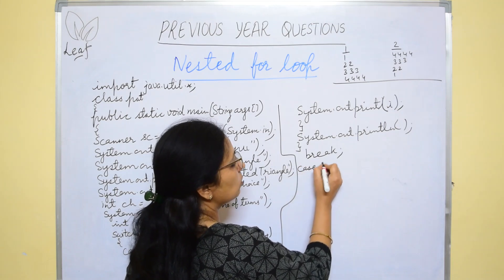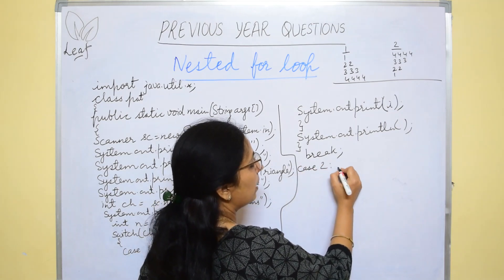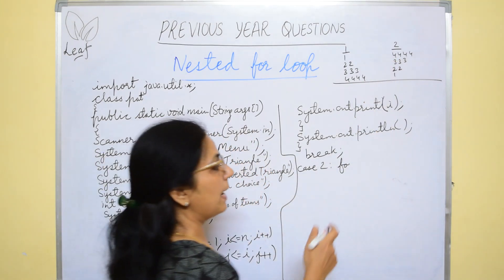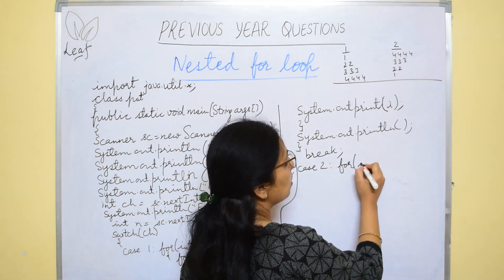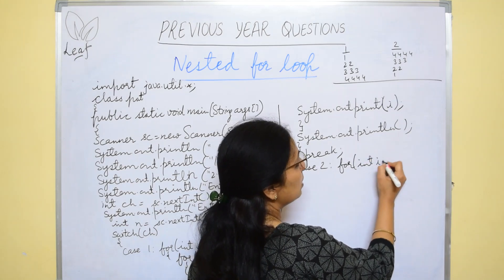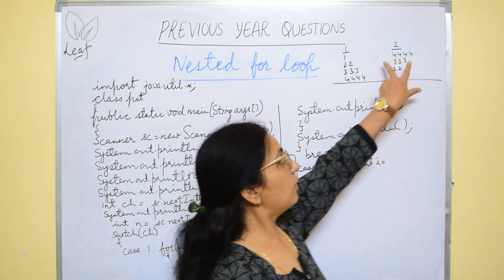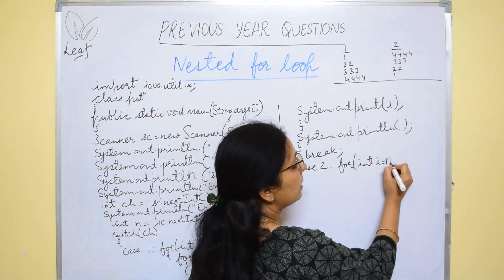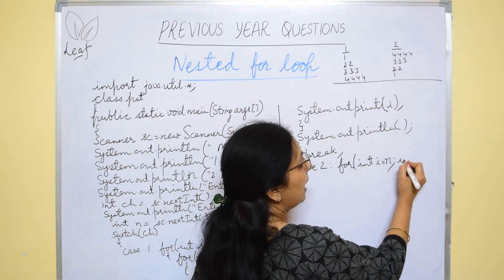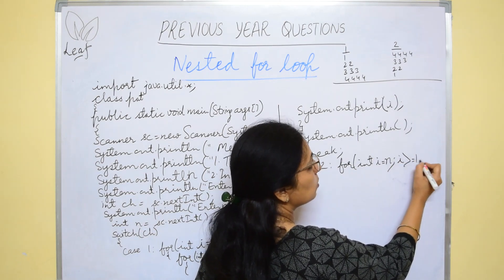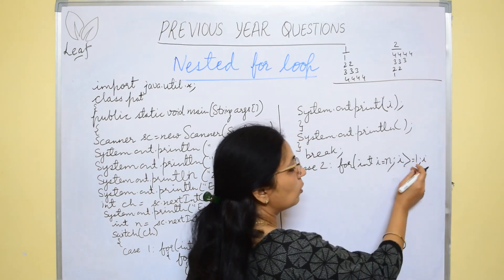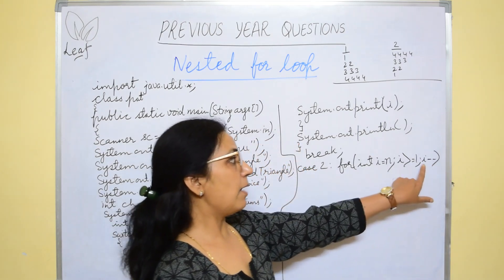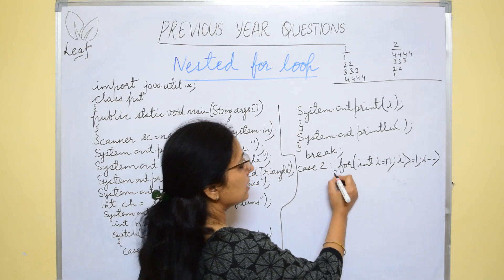Similarly we will do case 2. Here it is inverted, inverted right angled triangle. So int i equals to, how many times? First time according to the number of terms given in the question. So this loop will start from n i greater than equals to 1 and 4 to 1, 5 to 1. How you will move? By decrementing. So here I have used i minus minus.